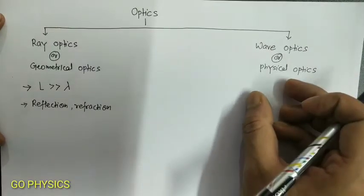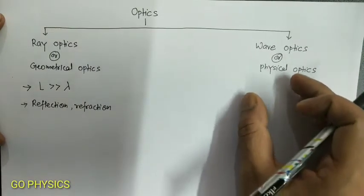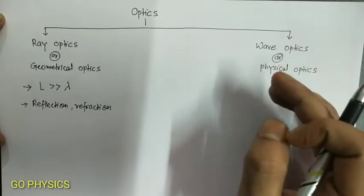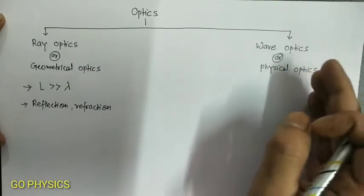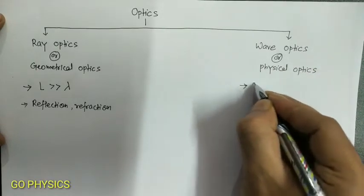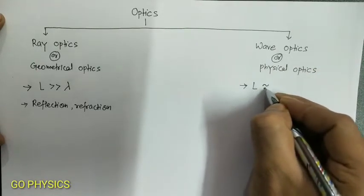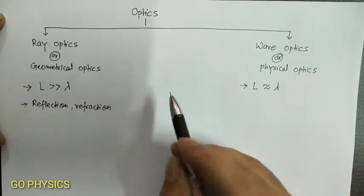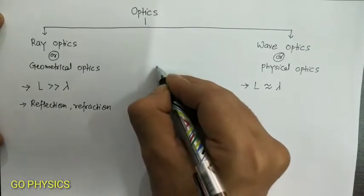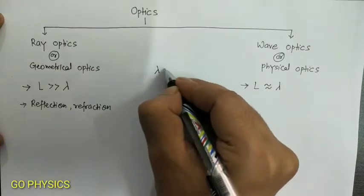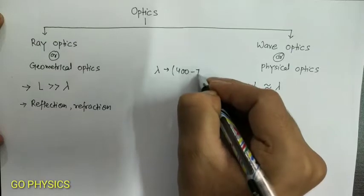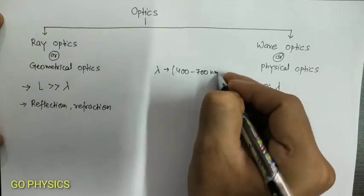While in wave optics, dimensions of the objects like slits, holes, etc., are comparable to the wavelength of light. And what is the wavelength of light? Wavelength of light lies between 400 to 700 nanometers.